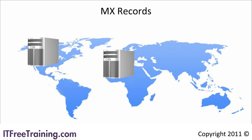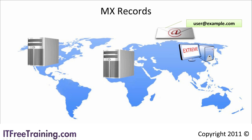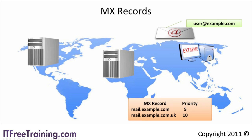In this example there is an email server in the USA and one in the UK for the same company, both connected by a high speed link. A client attempts to send an email to example.com. The first MX record for example.com has a priority of 5 — if the mail server can be contacted in the US, the email will be sent straight to this server. If the server cannot be contacted or is down, the next MX record with priority 10, mail.example.com.uk, will be tried. In other words, each server acts as a backup for the other.